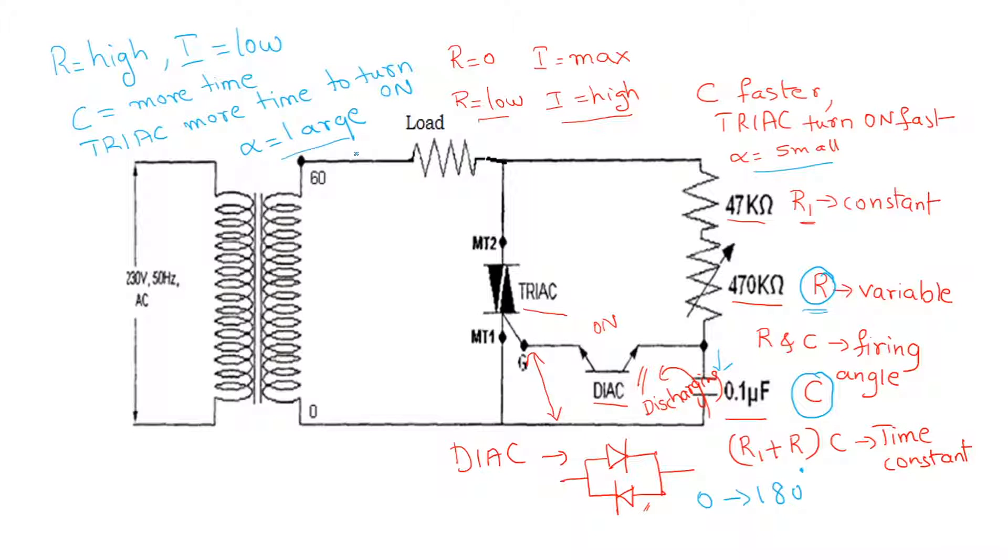Depending on the resistor value, either your firing angle is small or large. Let me write this as Vs - the voltage across the load as V0 and voltage across the TRIAC as Vt.